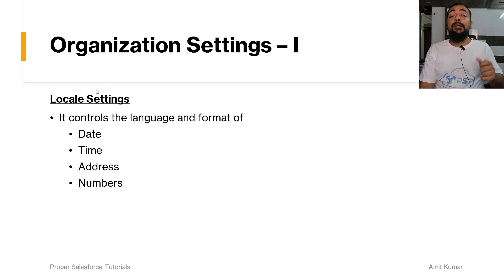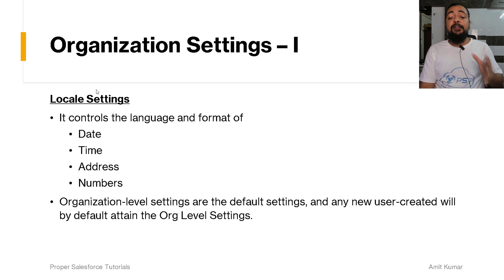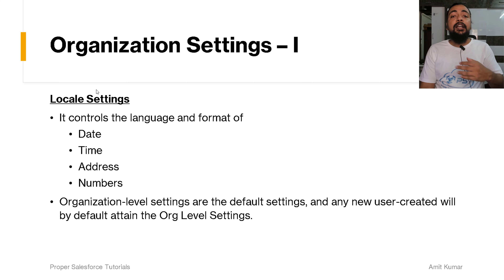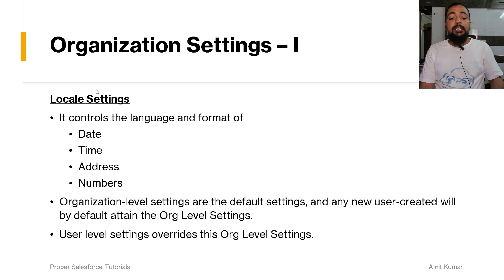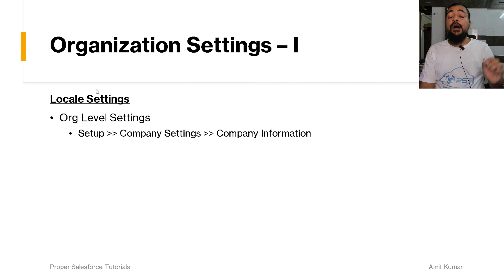Locale settings of our org control the language and format of date, time, address, and numbers. We can perform locale settings at the organization level — these are the default settings, and any new user created will get the default setting of the org. But later on, if that user wants, they can change the locale setting according to their own choice, and the user-level settings will override the org-level settings.